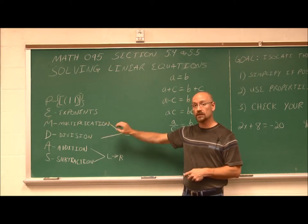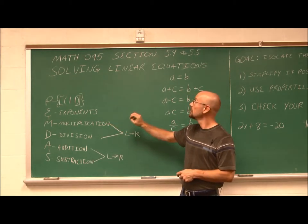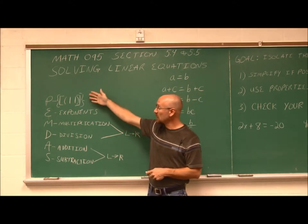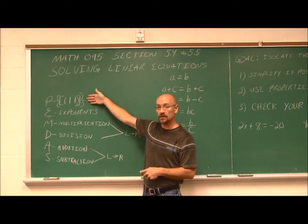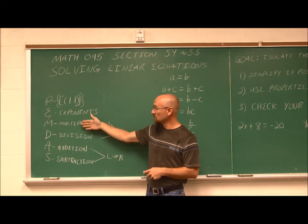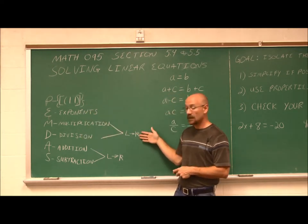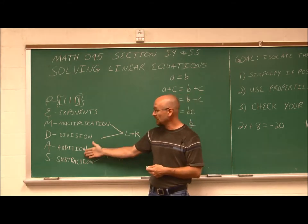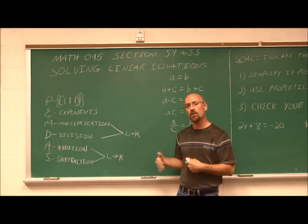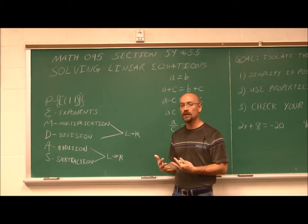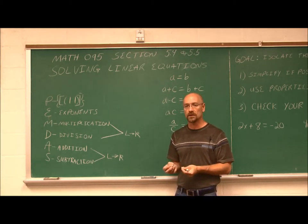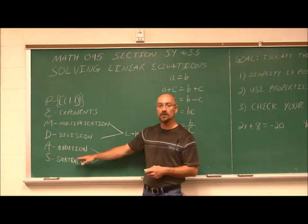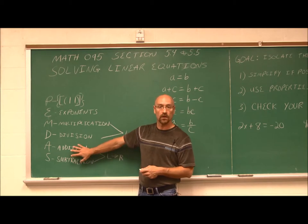We use order of operations to simplify expressions, but we also use it, in a sense, to solve linear equations. To do expressions, we eliminate parentheses, then work exponents, multiplication, and division — not in any particular order, but left to right. Same thing for addition and subtraction. But when we solve equations, our goal is to undo the math — to get the variable all by itself. So we undo the order of operations.